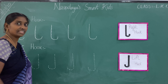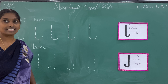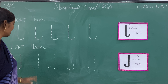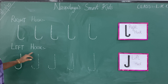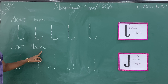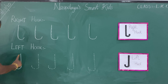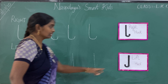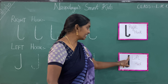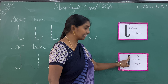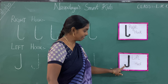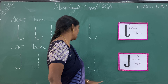Next one is left hook. What is this stroke children? Left hook. See here. This is left hook.